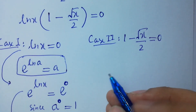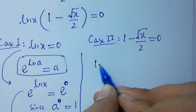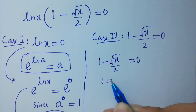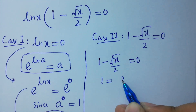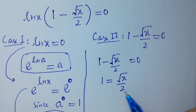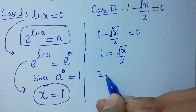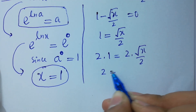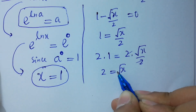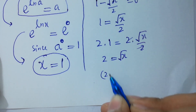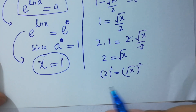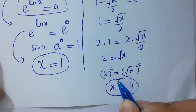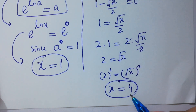In Case 2, 1 minus square root of x over 2 equals 0, so 1 equals square root of x over 2. Multiply both sides by 2: 2 equals square root of x. Square both sides: x equals 2 squared, so x equals 4.